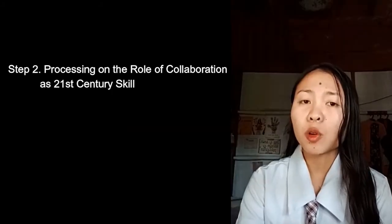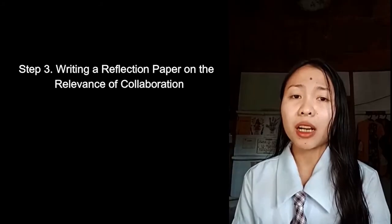Step two is processing on the role of collaboration as a 21st century skill. It is about processing the whole activity by asking how students accomplished their output and sharing ideas on the importance of collaboration in real-life situations. The third and last step is writing a reflection paper on the relevance of collaboration. Each member of the group will bring their own experience and understanding, and they will collaborate and participate with their group mates.